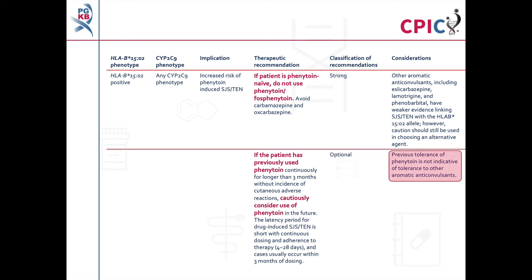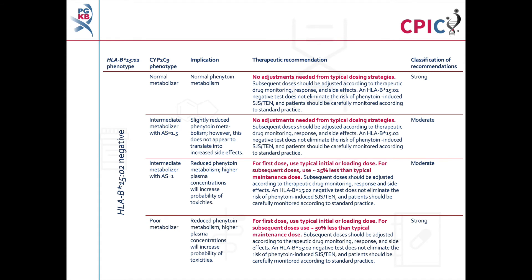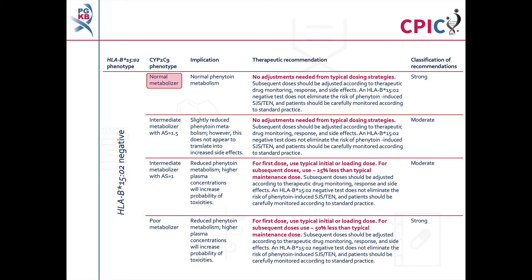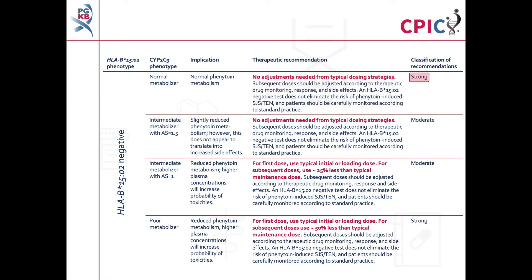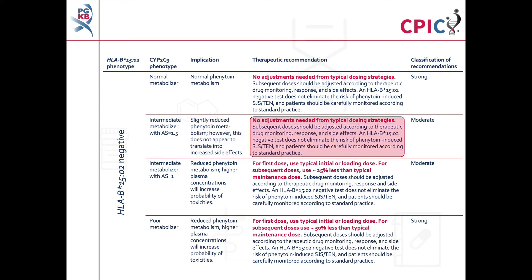Be aware that previous tolerance of phenytoin is not indicative of tolerance to other aromatic anticonvulsants. The following recommendations apply only to patients who are negative for the HLA-B*1502 allele. Patients who are CYP2C9 normal metabolisers will have normal metabolism of phenytoin; typical dosing strategies can be used in these patients. This is a strong recommendation. Patients who are CYP2C9 intermediate metabolisers with an activity score of 1.5 will have slightly reduced metabolism of phenytoin; however, this does not appear to have any impact on side effects, so typical dosing strategies can be used. This is a moderate recommendation.